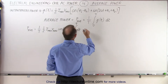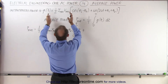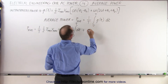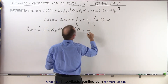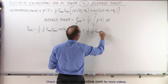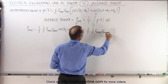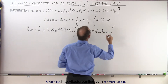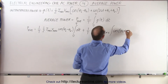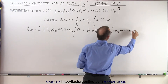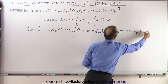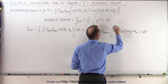We then add to that the integral of the second portion. Since this is a constant, we can write 1 over t times ½ i_max v_max times the integral of the cosine of (2ωt plus the two phase angles) dt, also integrated from 0 to t.